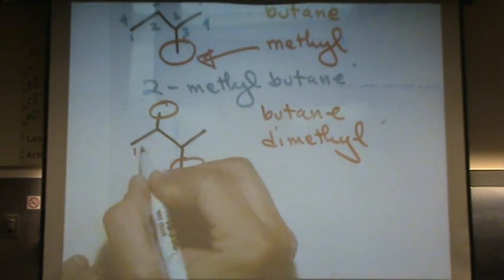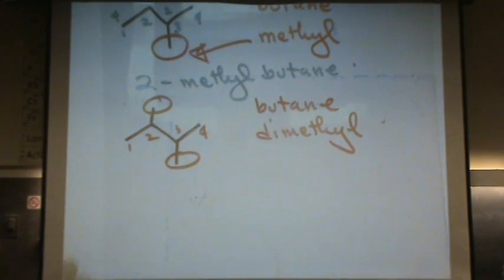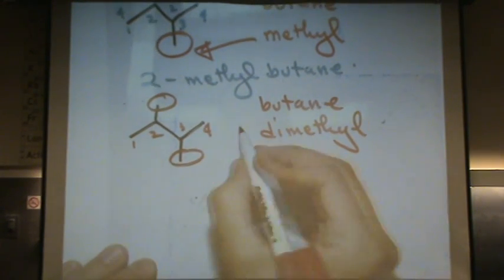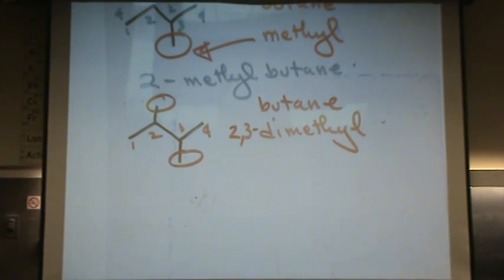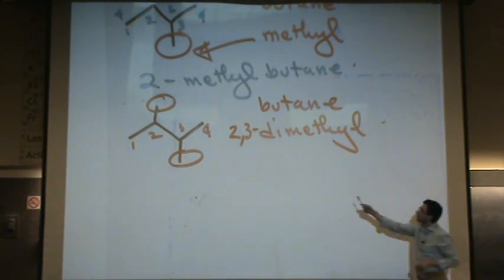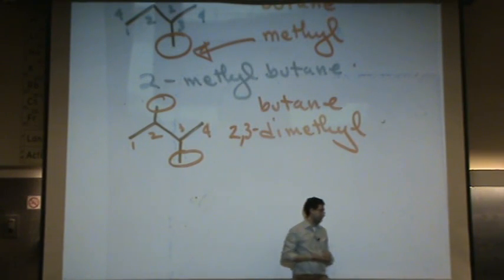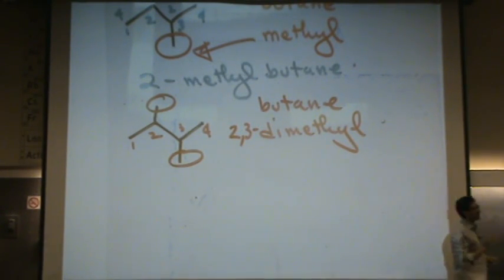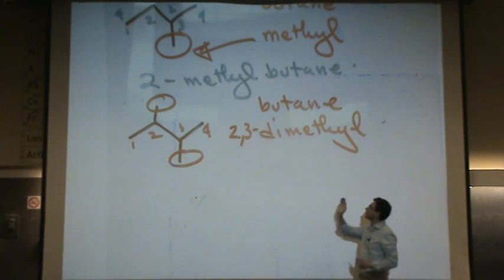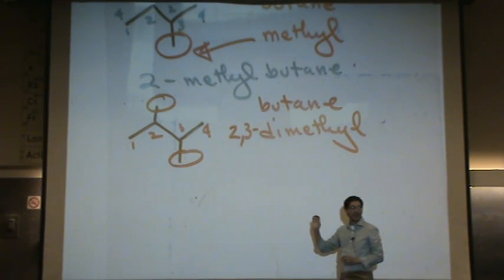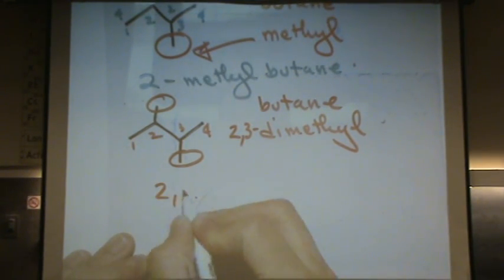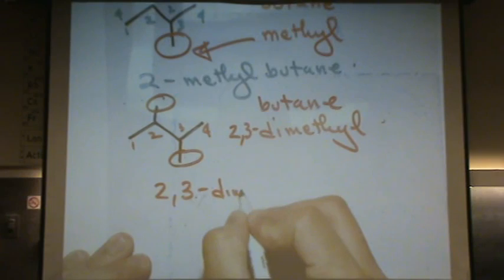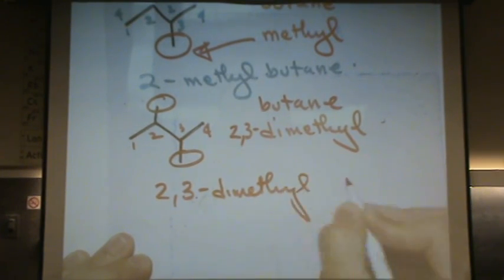Dimethyl, because there's two of them. And let's number the chain one, two, three, four. So the dimethyl is on the two and the three position. You see how it's at the second and third carbon. So you have to, it feels a little redundant in the beginning, but you have to put two, three, and the di.